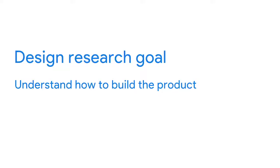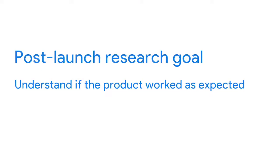If you run research during the design phase, your goal should help you understand how to build the product. This is called design research and gives you the answers you need to move forward through the design process with confidence. In our example, the goal would be to learn how to build the dog walking app and what features it needs to solve the user's problem. Finally, if you run research on a product after it has been launched, your research goals help you understand if the product worked as expected. This is called post-launch research. The post-launch research goal for our dog walking app could be to understand if the app we designed attracts and retains regular users.